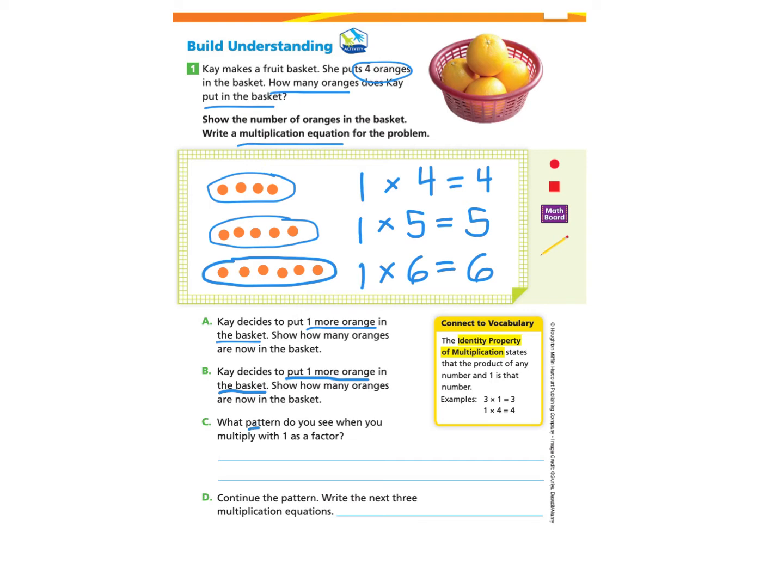Part C, what pattern do you see when you multiply with 1 as a factor? Well, when we take a look at the pattern, we have 1 times a number and we get that same number. So 1 times something like 5, we're going to get the answer of 5. I'm noticing that this factor 6 is actually the product 6 when it's multiplied with 1.